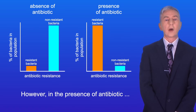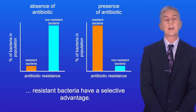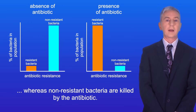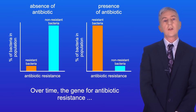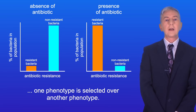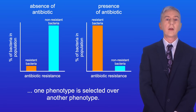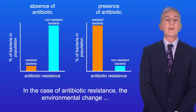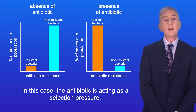However, in the presence of antibiotic, resistant bacteria have a selective advantage. Resistant bacteria can survive and reproduce in the presence of antibiotic, whereas non-resistant bacteria are killed by the antibiotic. So over time, the gene for antibiotic resistance becomes more common in the population. In directional selection, one phenotype is selected over another phenotype, and directional selection takes place when the environment changes. In the case of antibiotic resistance, the environmental change is the presence of antibiotics, so in this case the antibiotic is acting as a selection pressure.